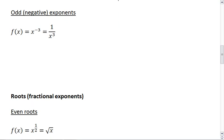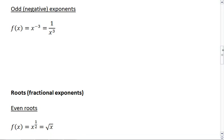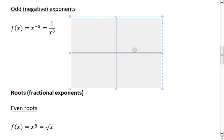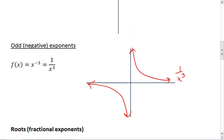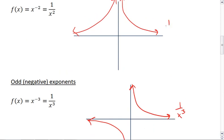Okay. Odd exponents. So odd negative exponents, such as 1 over x cubed, looks like this. So similar to 1 over x squared, but what we find is that the left side looks as though it's been flipped over the x-axis.